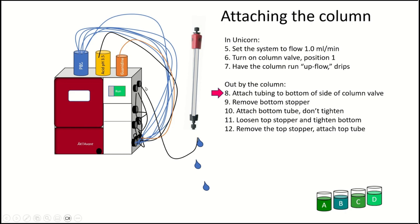Okay. Now we're going to attach a bit of tubing from the column valve to, we're going to just attach that there. And so now the drips are going to be coming up the bottom of the tube. And then we're going to remove the bottom stopper on the column still have buffer dripping out of the tube there. And then we're going to attach the bottom tube to the actual column, but we're not going to tighten it. What that's going to do is it's still going to allow flow to go through the tube, but it's still going to be dripping at the bottom.